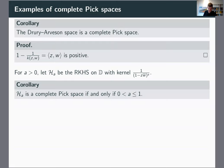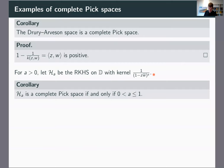We can also prove that a whole bunch of other spaces are complete pick spaces. For every number a bigger than zero we have this reproducing kernel Hilbert space on the disk with kernel being a power of the Szegő kernel. It follows from the McCulloch-Quiggin theorem that this space is a complete pick space if and only if the index a is less than or equal to one. So a equals one corresponds to Hardy space, a less than one corresponds to some weighted Dirichlet-type spaces — these turn out to be complete pick spaces. But a equals two corresponds to Bergman space, which is not a complete pick space.